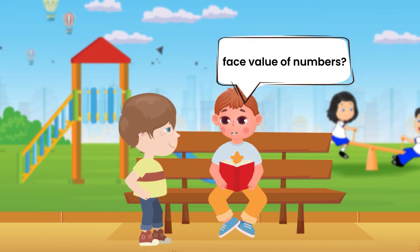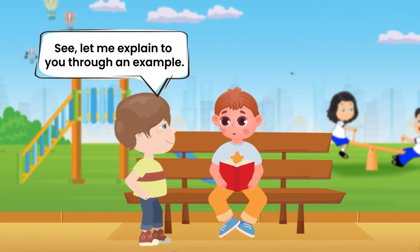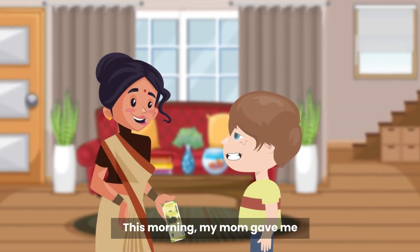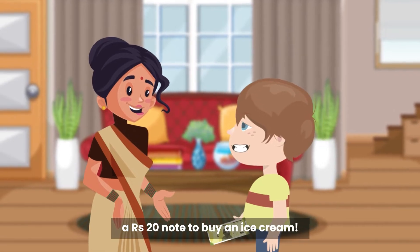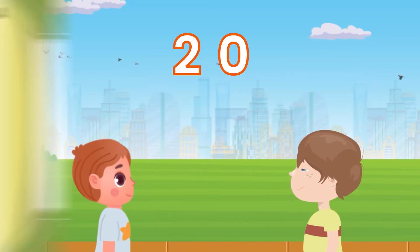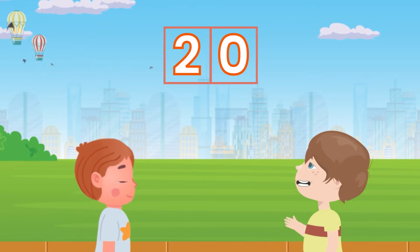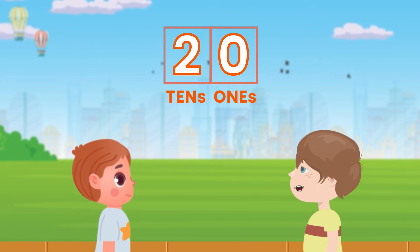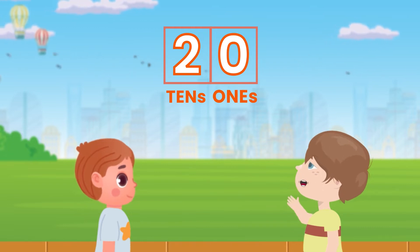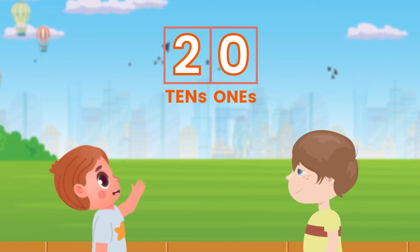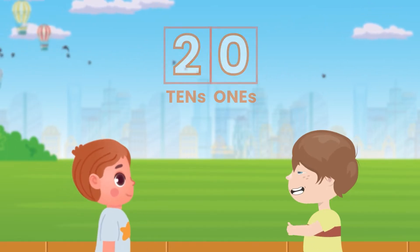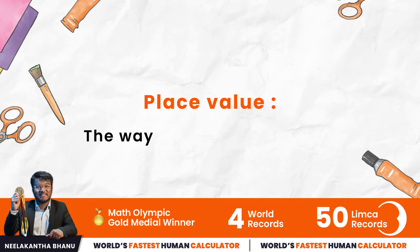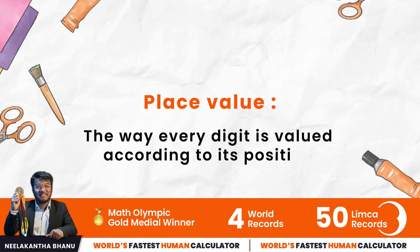Let me explain with an example. This morning my mom gave me a 20 rupee note to buy an ice cream. Let's expand this number — 20 is nothing but two tens and zero ones. So the place value of zero is ones, and the place value of two is tens. Yes, my ma'am taught me that place value refers to the way every digit is valued according to its position.